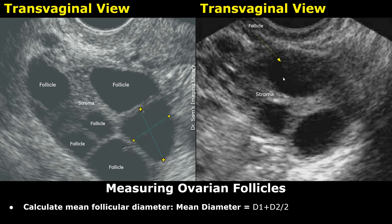Always measure the follicle at its largest visualized size. Measure inner wall to inner wall. Obtain two perpendicular diameters. Use the mean diameter for interpretation. Consistency in technique is essential for accurate serial monitoring.